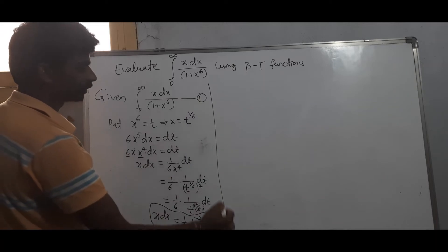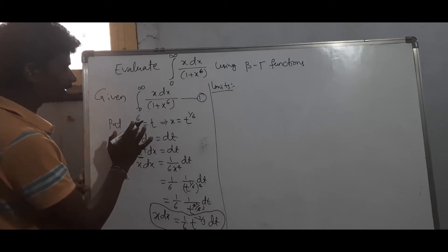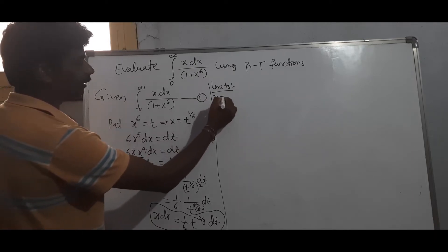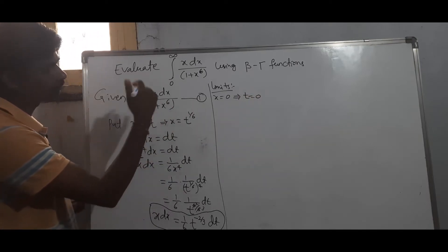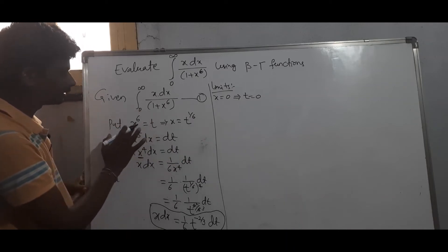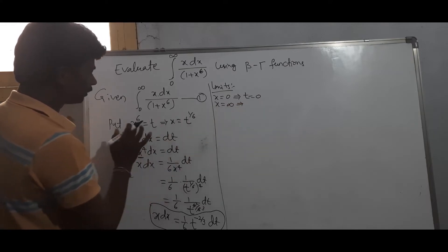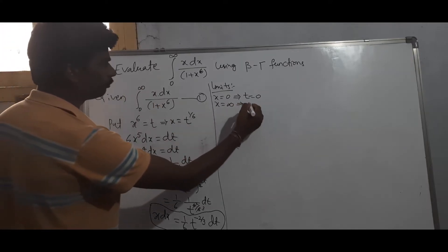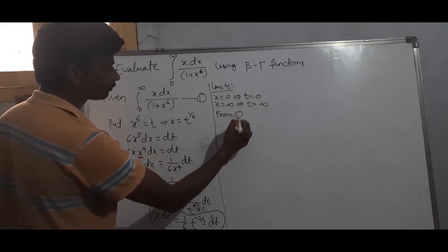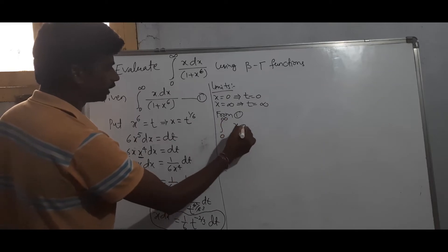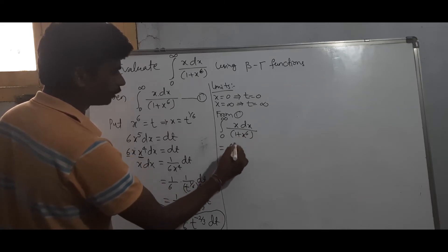Now let's check the limits. Lower limit: when x equals 0, t equals 0. Upper limit: when x equals infinity, t equals infinity. So from equation 1, the integral from 0 to infinity of x dx divided by (1 plus x to the power 6) equals the integral from 0 to infinity of t to the power (minus 2/3) dt.